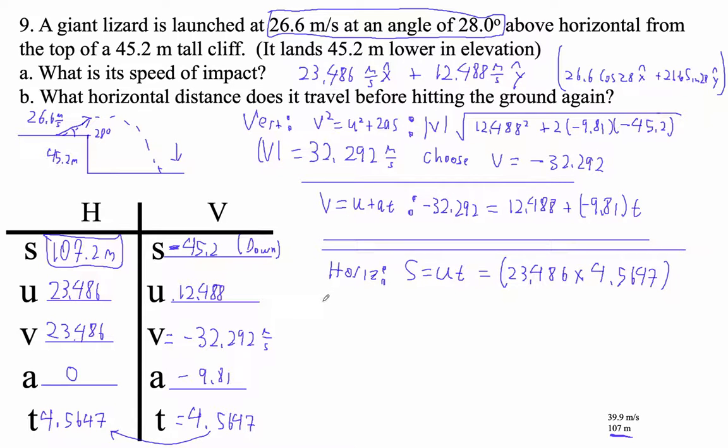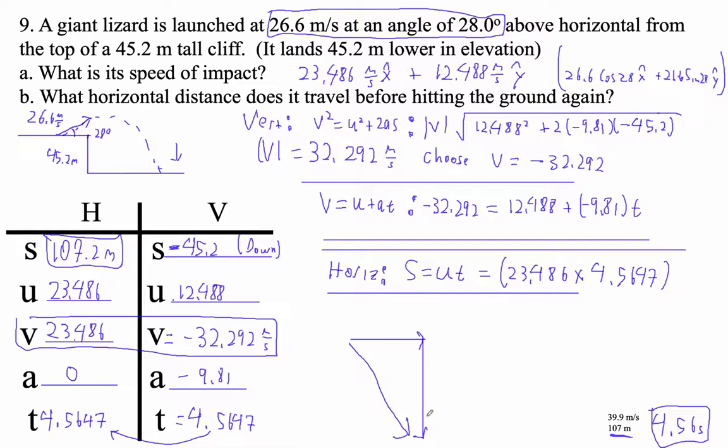And then it says, what's the speed of impact. Time in the air, by the way, would be 4.56 seconds if they ask that. For the speed, we're going to take this guy and make a vector out of it. It's going to be down. It's hard to draw straight lines like that. Don't laugh at me. 23.486. And then this is 32.292. And then the speed is going to be the magnitude of that.